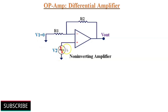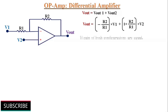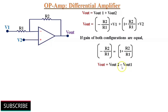Now consider V2 is acting alone and V1 is at ground potential. Because of the non-inverting configuration, Vout2 = (1 + R2/R1) × V2. So our final Vout = −(R2/R1) × V1 + (1 + R2/R1) × V2. If the gains of both inverting and non-inverting configurations are equal, Vout becomes Vout2 − Vout1, where the negative sign is due to the 180-degree phase reversal of the inverting configuration.